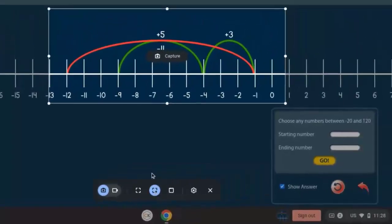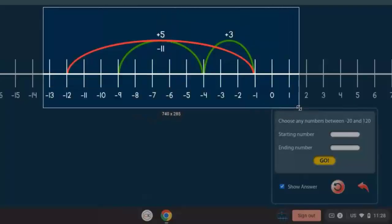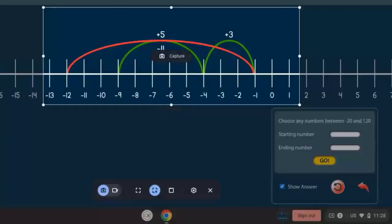You make sure that selection is active and you just drag around the area that you want to capture. In this example I'm just going to capture the area between negative 13 and 1. I'm just going to hit the Enter key.